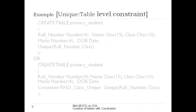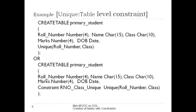To make the row number and class combination unique, as in a primary school database, we can use a table-level UNIQUE constraint applied on the row number and class combination. We specify the table-level constraint after defining all columns, and we can also give it our own unique constraint name.